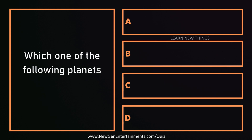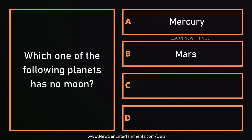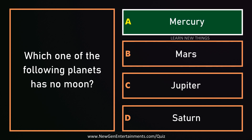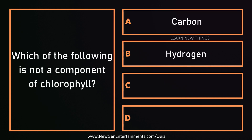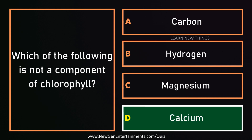Which one of the following planets has no moon? Mercury. Which one of the following is not a component of chlorophyll? Calcium.